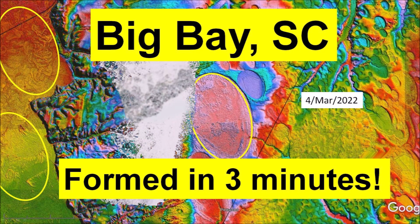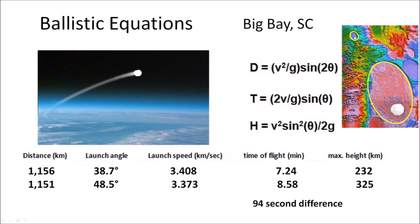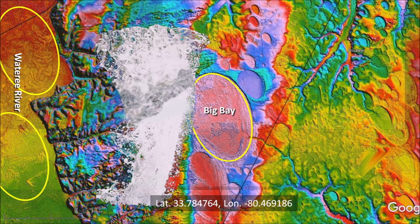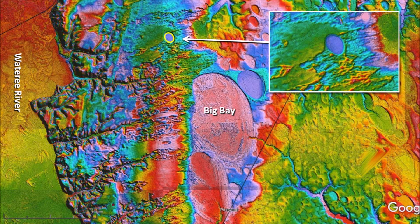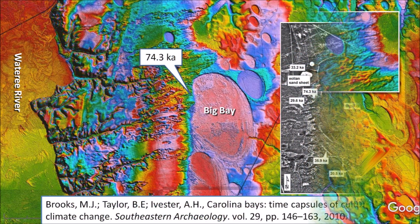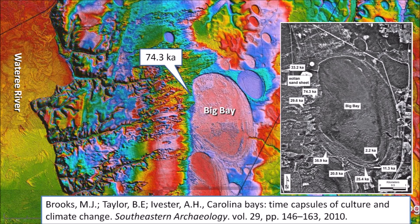In a video released in March 2022, I calculated that Big Bay and the sand sheet that covered its margin could have formed in 3 minutes. This is derived from flight times calculated with ballistic equations using the angles of impact implied by the width-to-length ratios of the bays. An extraterrestrial impact on the ice sheet by the Great Lakes would have launched ice boulders with flight times of 7 to 9 minutes. Impacts on the watery riverbed made waves that dredged sediment along the bank and deposited it on the edge of Big Bay. Ninety-four seconds after Big Bay was formed, a small impact made a bay on top of the sand sheet. A paper by Brooks et al. found that the sand sheet on the rim of Big Bay has an age of 74.3 thousand years — that is what you would expect from dredging old sediment from the river bank. This is not related to the date of bay creation. If you build a stone house using old stones, you cannot determine the age of the house by dating the stones.